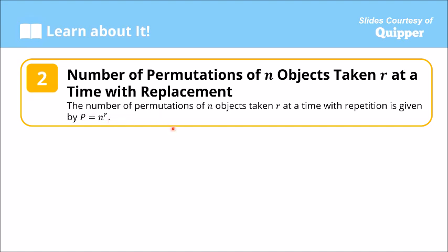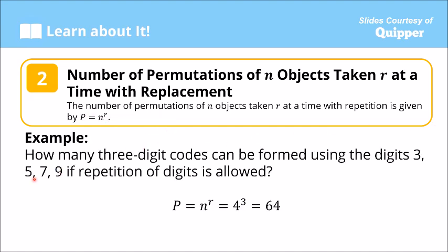Example: How many three-digit codes can be formed using the digits 3, 5, 7, 9 if repetition of digits is allowed? So P equals n to the power of r equals 4 raised to 3, which equals 64.